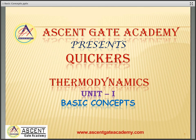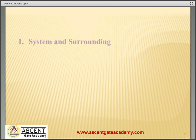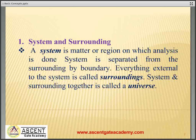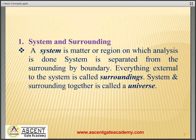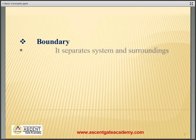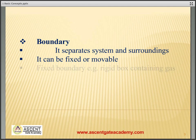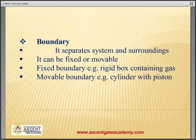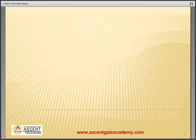We will have a very quick review on the basic concepts of thermodynamics. A system is a matter or region on which analysis is done. System is separated from surrounding by a boundary. Everything external to the system is called surrounding, and system and surrounding together comprise a universe. The boundary separating system and surrounding can be fixed or movable — for example, a rigid box containing gas has a fixed boundary, and a piston cylinder arrangement has a movable boundary.